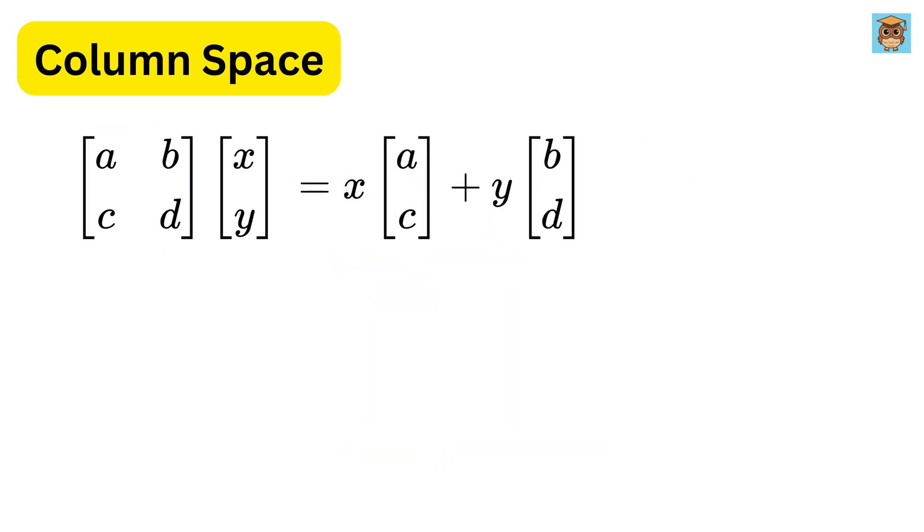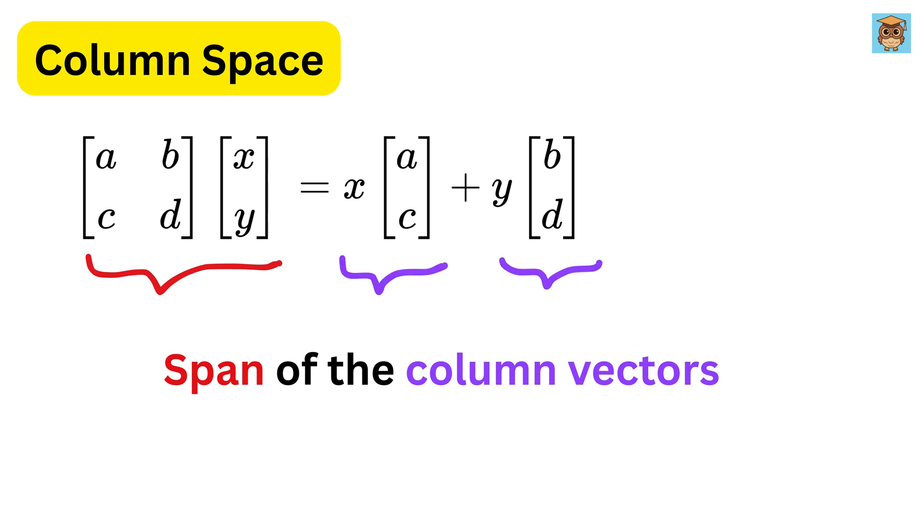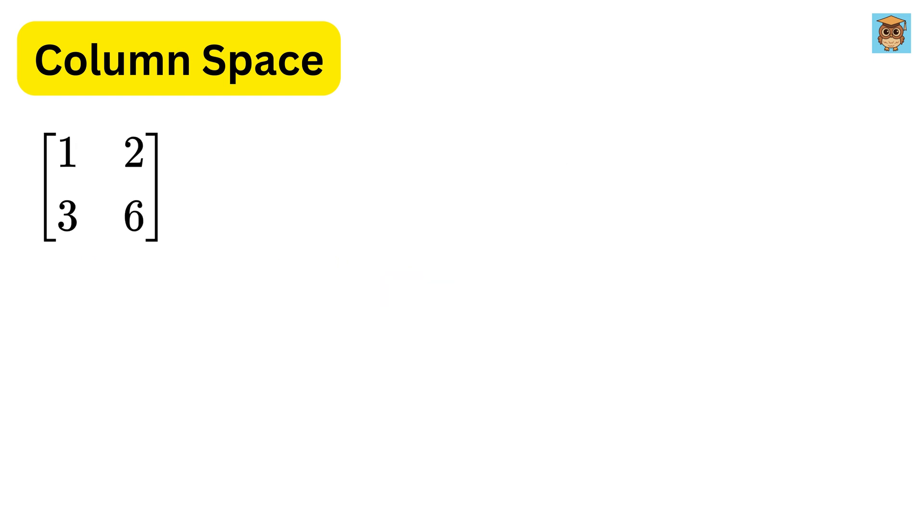That's it. Now, this definition will make much more sense. Column space is the span of its column vectors, because when you multiply a matrix by any input vector, all you're really doing is mixing its columns in different proportions. So, in our case, the column space of this matrix A is the span of the vector 1, 3, which we write like this.